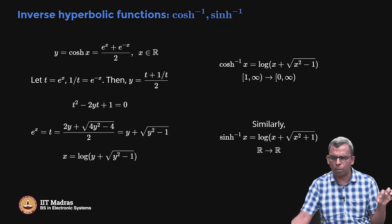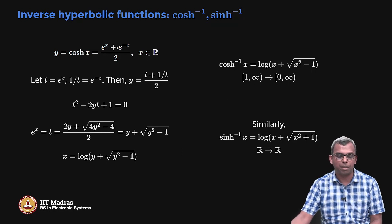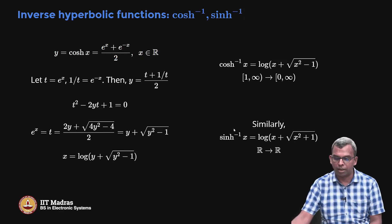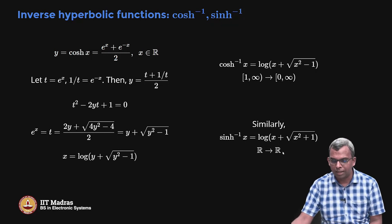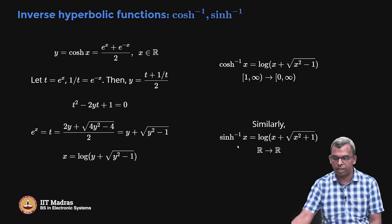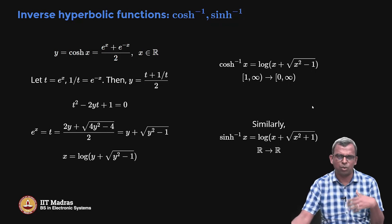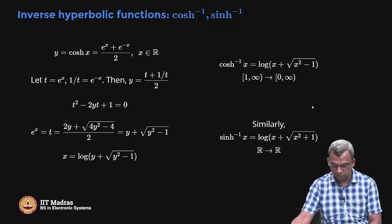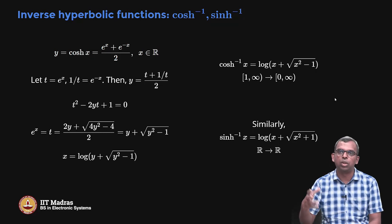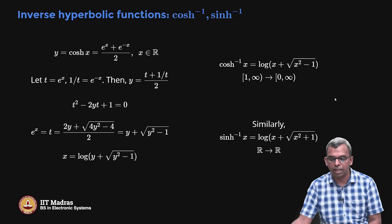By a very similar operation, starting with sinh(x) = (e^x - e^(-x))/2 and doing the same steps, you get sinh⁻¹(x) = log(x + √(x² + 1)), and this goes from all reals to all reals. There is no need to remember all these things by heart — you can look them up. This is just to show that these inverses can be easily computed.